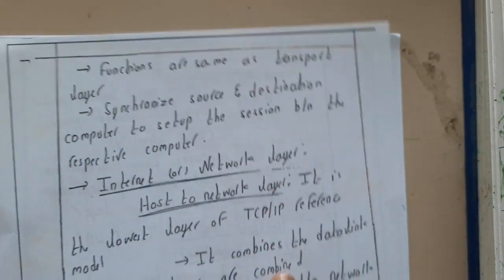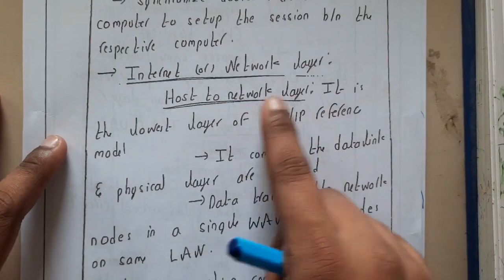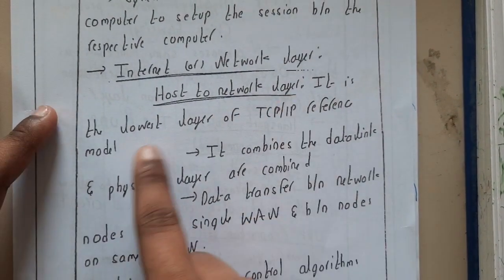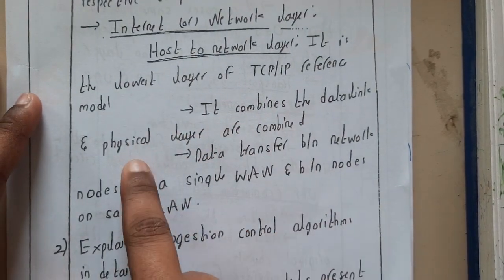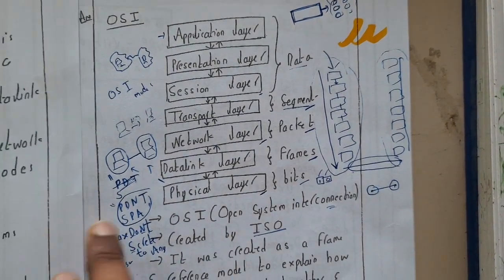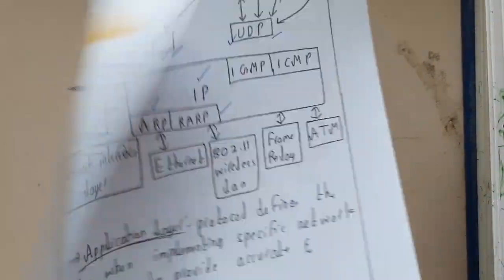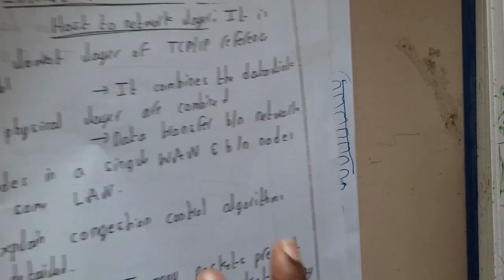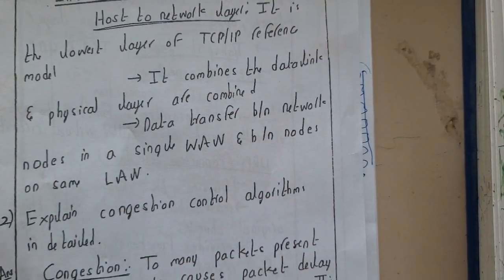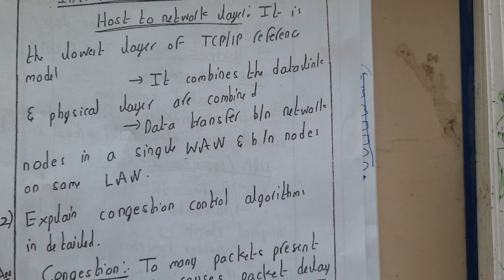The last layer is the Internet or Network layer — also called the Host-to-Network layer. It is the lowermost layer of the TCP/IP reference model and combines both the Data Link layer and the Physical layer from OSI. These two layers are now called the Network Interface layer. Here we will be using connections like LAN, MAN, and WAN to transfer data node to node.